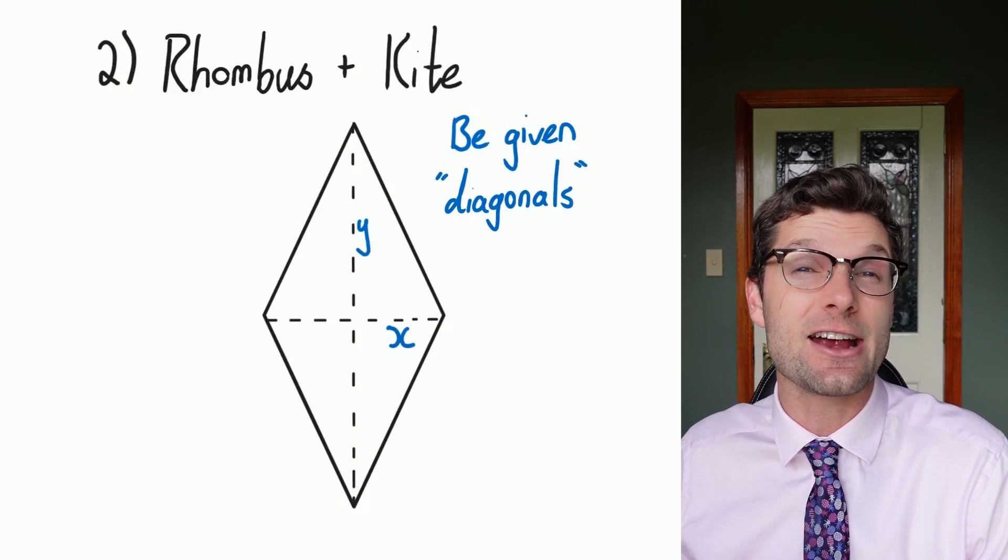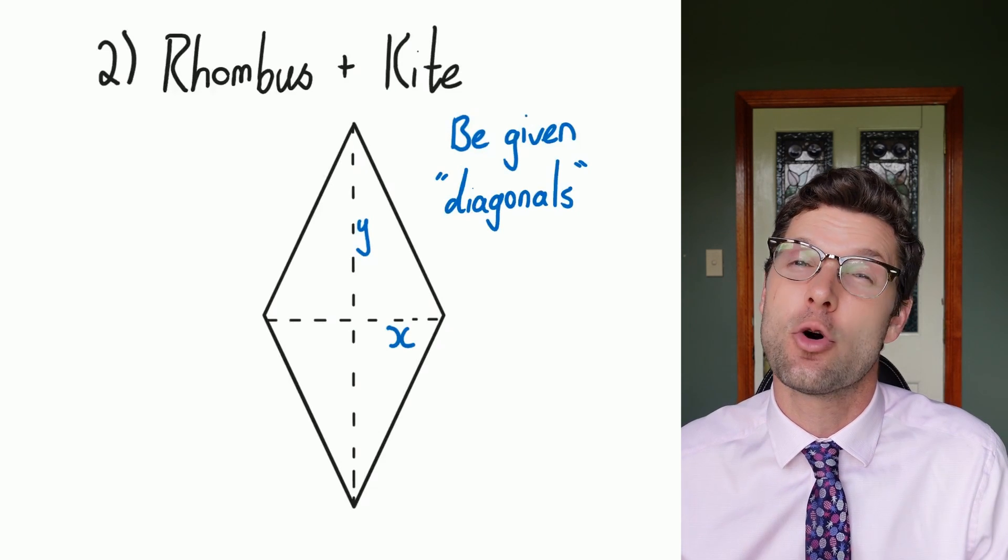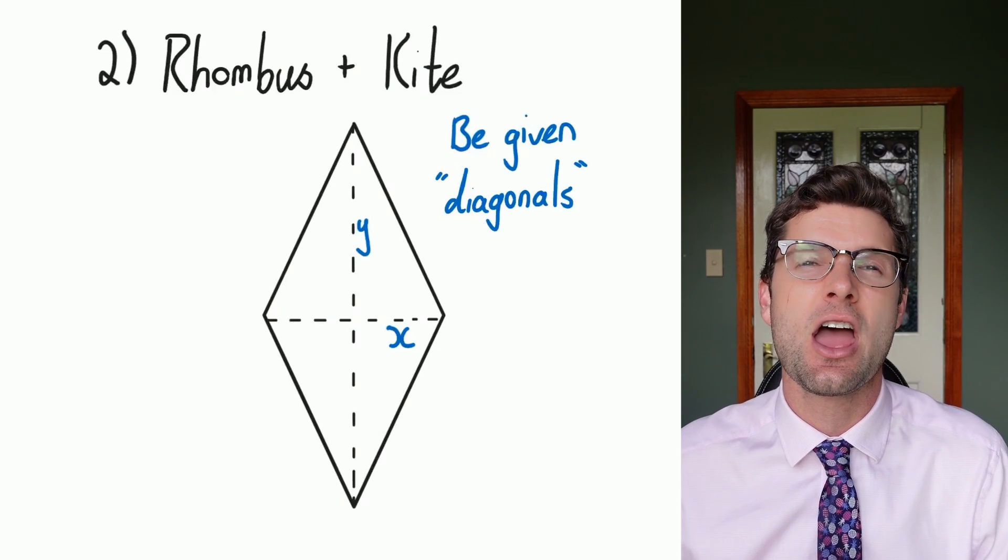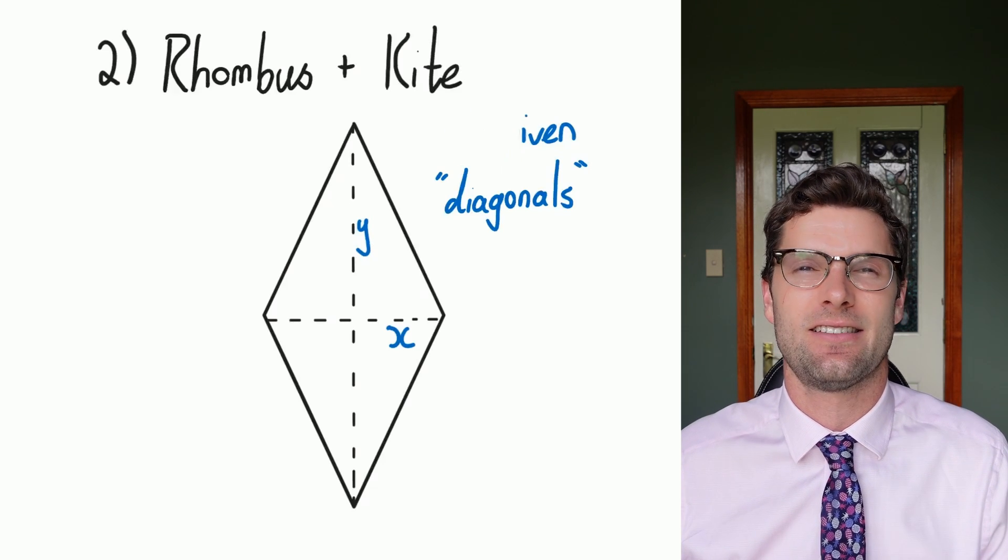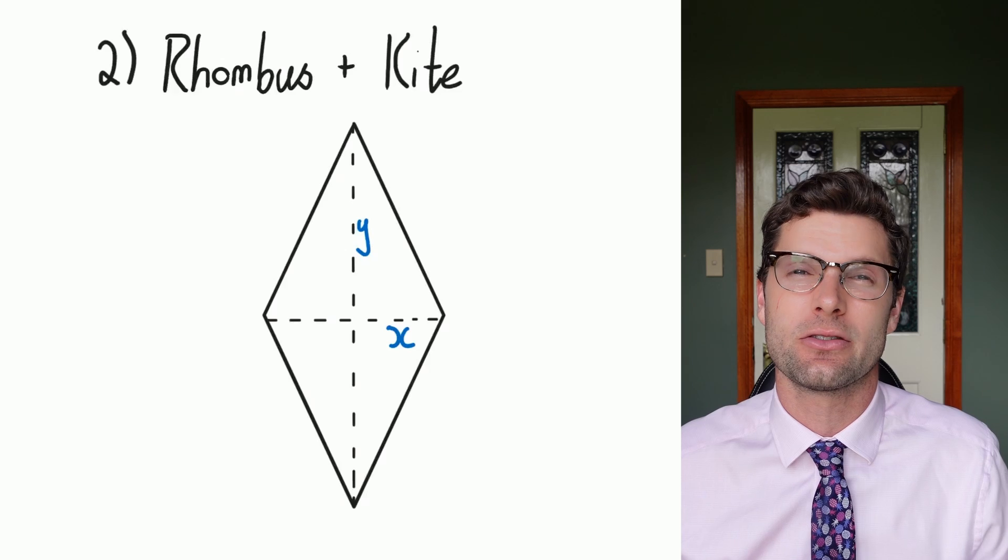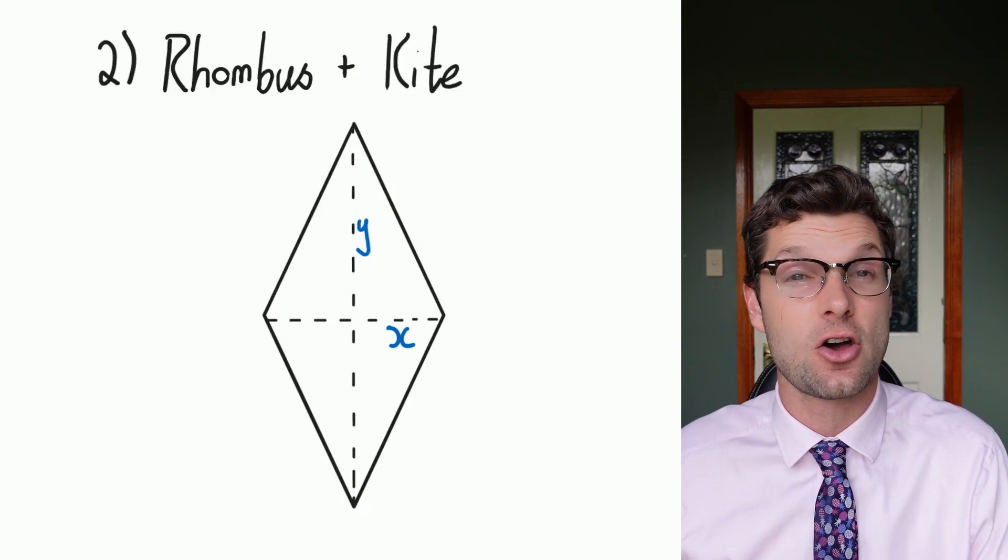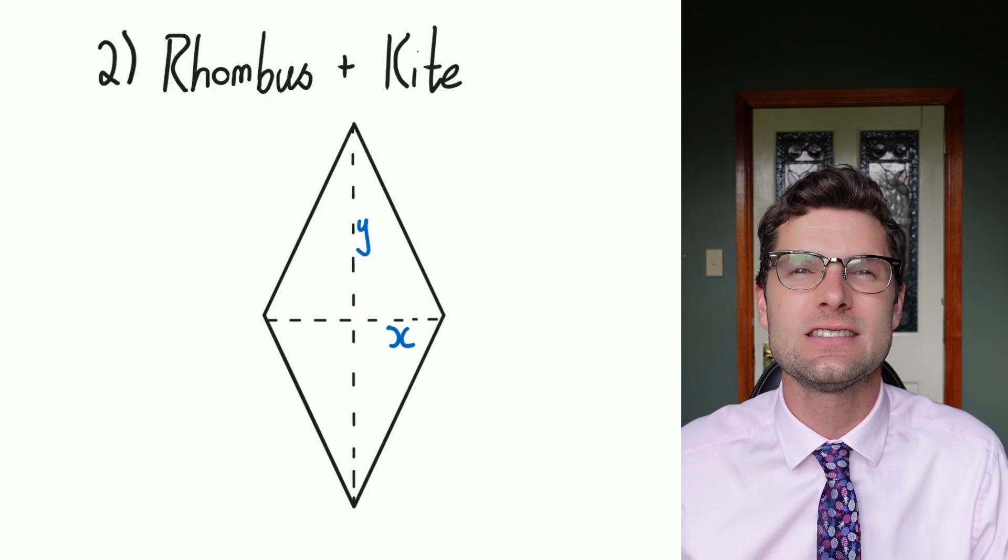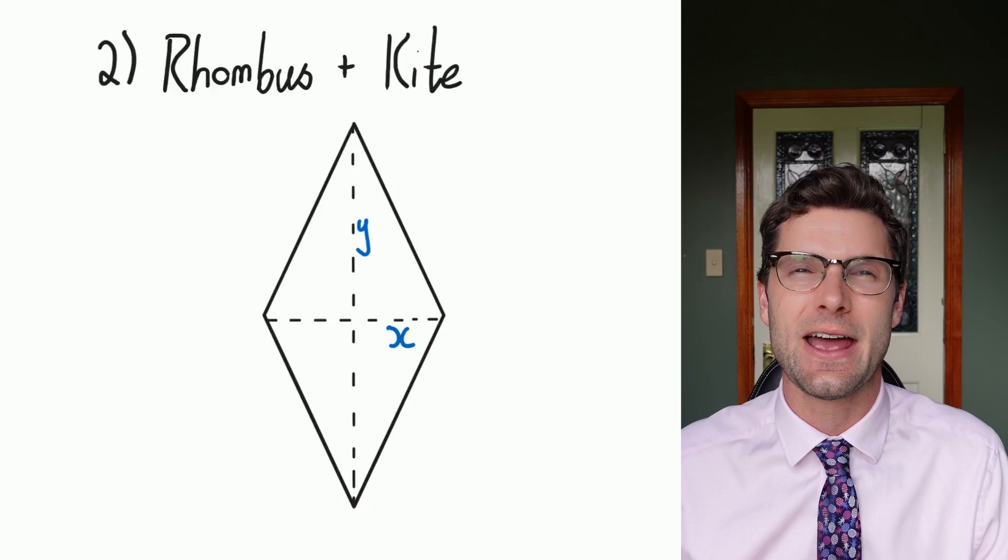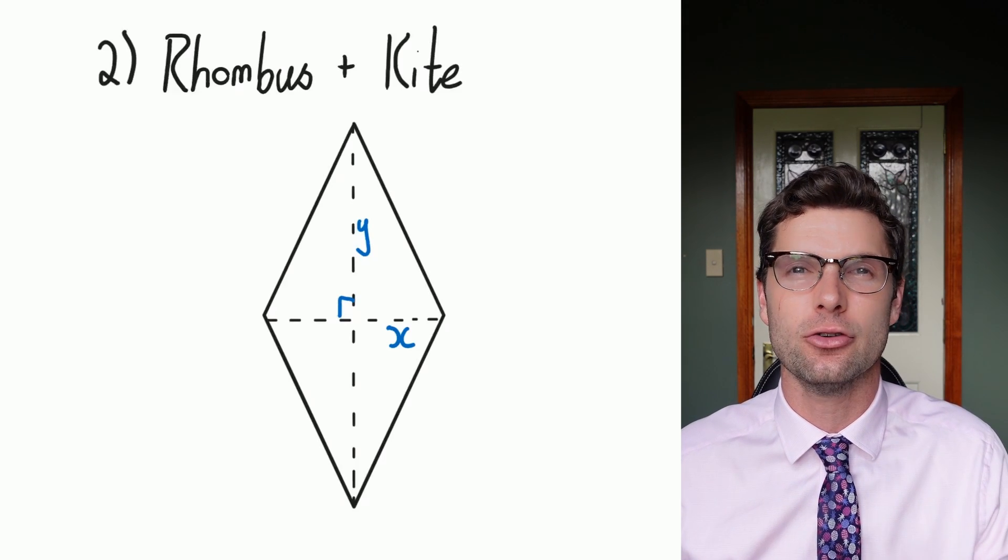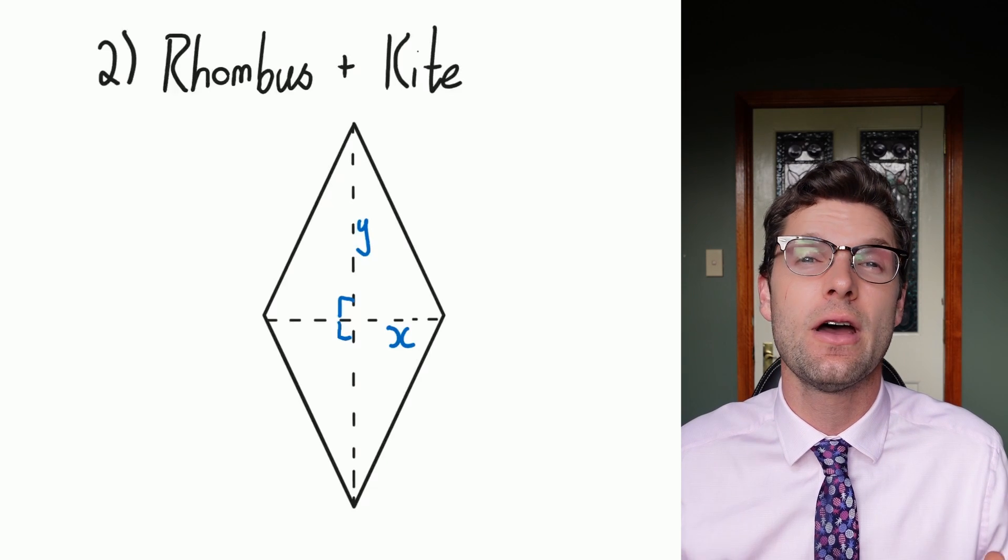So the next two shapes we're going to look at actually do have the same formula. So we're just going to look at kites as a whole, but this also applies to a rhombus. So for these ones, you're always going to get given two lines that dissect the entire shape, or go along the diagonals, and we're going to call these X and Y. So again, we're not going to have the side length. They're not important for this, but it's the X and Y that are super important. One of the key features of these shapes is that the two diagonals actually make right angles where they intersect, and that helps visualize our proof quite a lot.